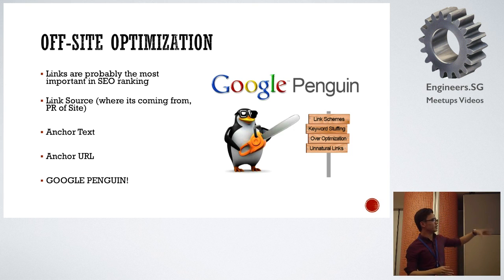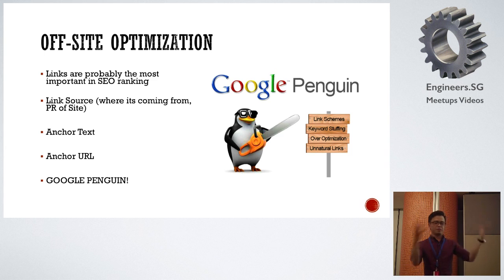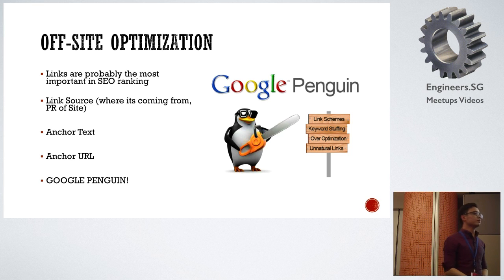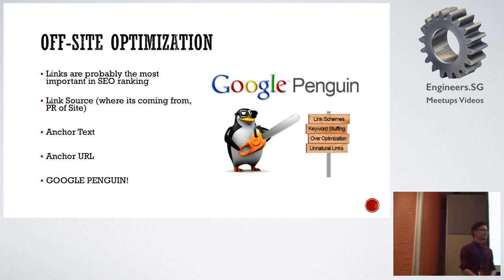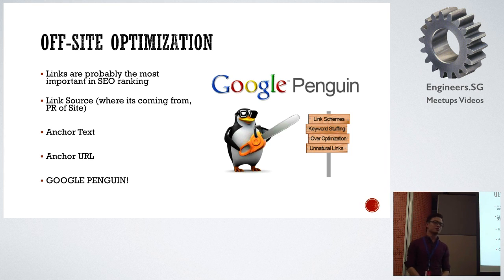Google Penguin basically means: do not over-optimize on keywords. Unnatural links include links coming in too fast, from multiple suspect sources, or every page of one site linking to you. If you have a WordPress blog with a thousand pages and you put it in a blog roll, it might damage you. What if a competitor buys unnatural links and points them at your site? That can work — there's no real way to prevent it if competitors want to do such things.